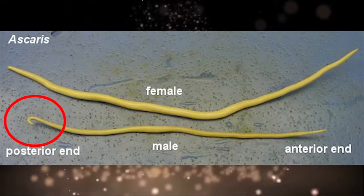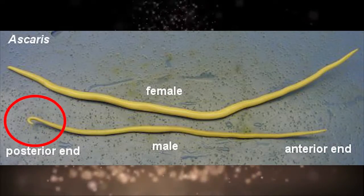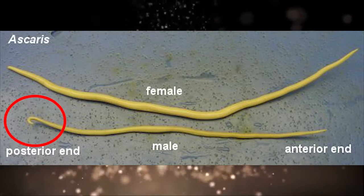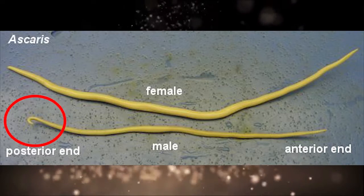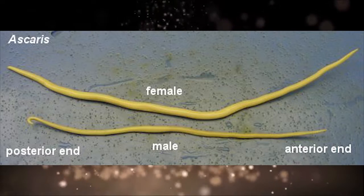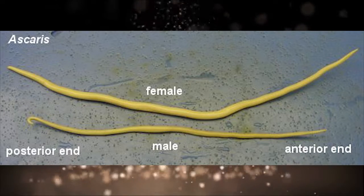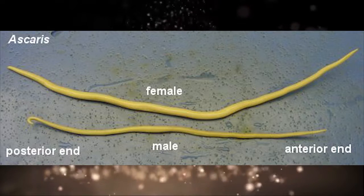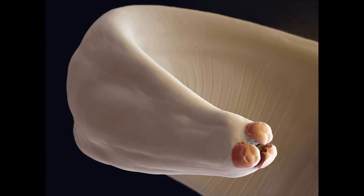Males have a curved tail with two spicules, but females tails are not curved. Both have a finely striated cuticle and mouth with three lips.